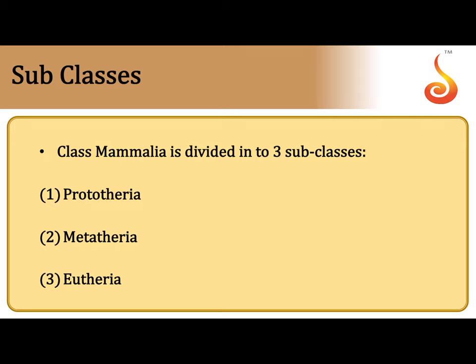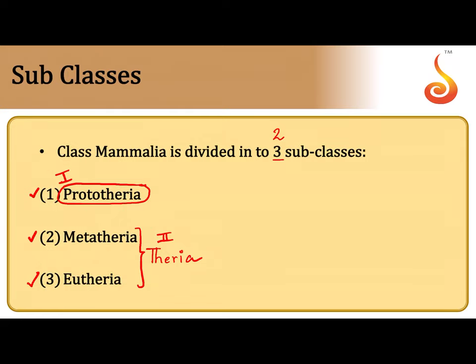Class Mammalia is divided into two major subclasses: Prototheria and Theria. Sometimes these two are considered together under Theria. Under the second subclass, Theria, we have two infra classes: Metatheria and Eutheria.